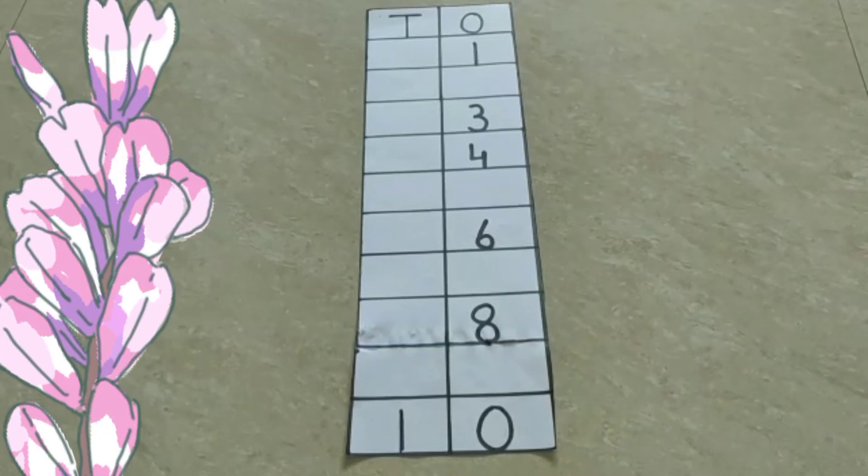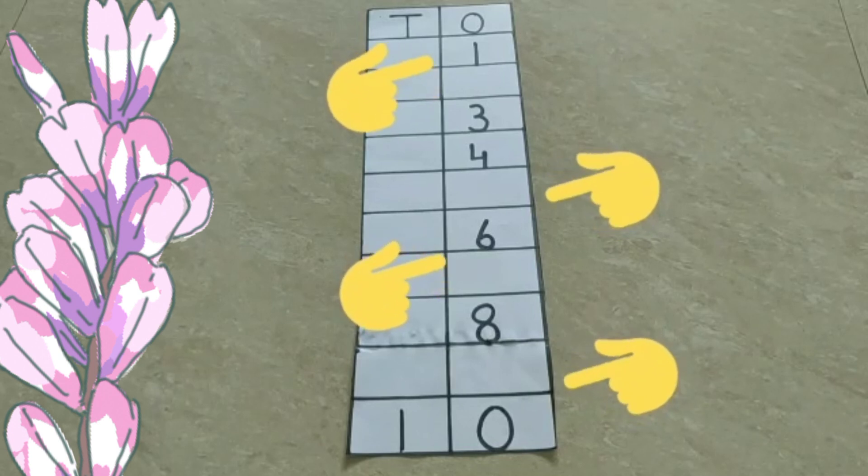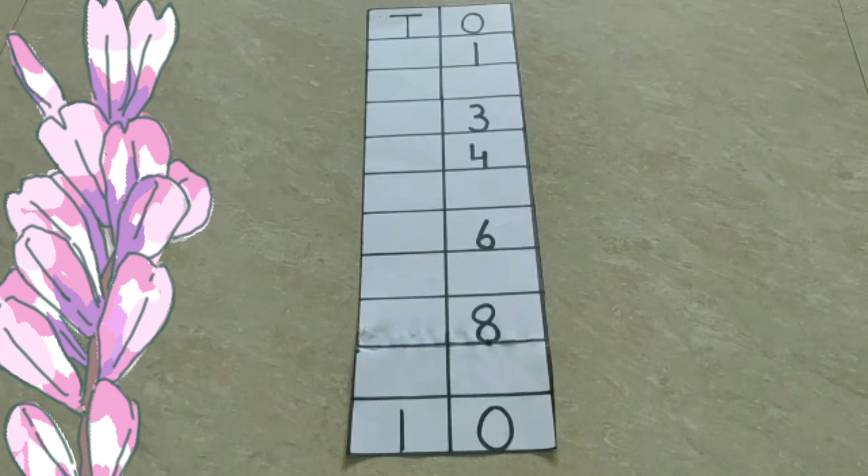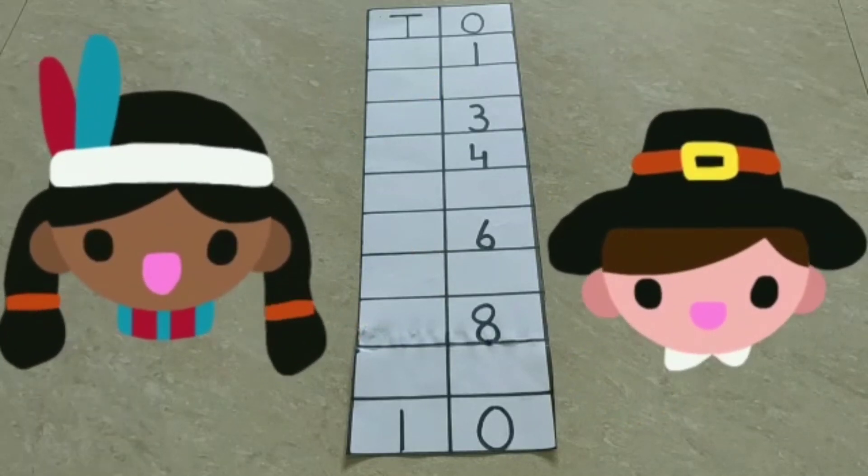Okay children, here you can see I have written numbers in boxes. But I forgot to fill some boxes. As you can see here, some boxes are blank. So will you help me to find the missing numbers?